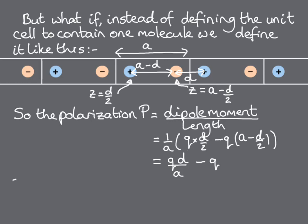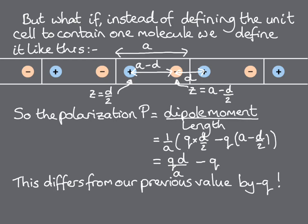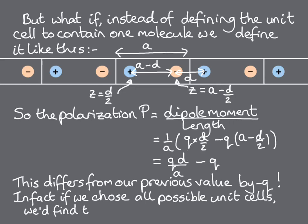This is not the same as the value we obtained with the previous choice of unit cell, but it differs from it by q. In fact, if we repeated this procedure, choosing different unit cells each time, we would obtain many different values for the polarization, all of which could be written as qd over a plus some negative or positive integer times q. You can give it a try to convince yourself, remembering that your unit cell can include any pair of anions and cations that can be periodically repeated to build up the chain, not necessarily only those that are next to each other.